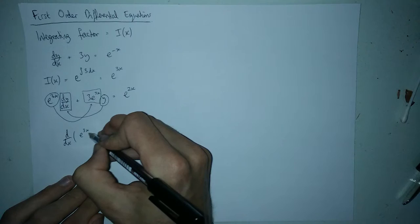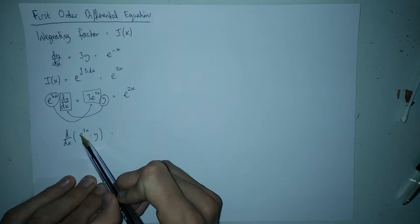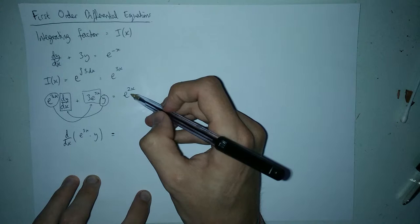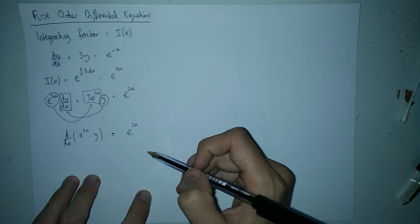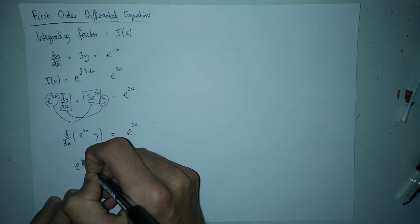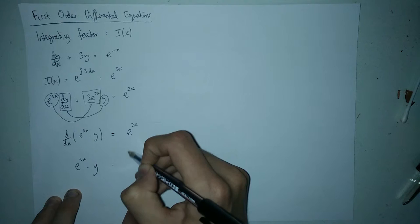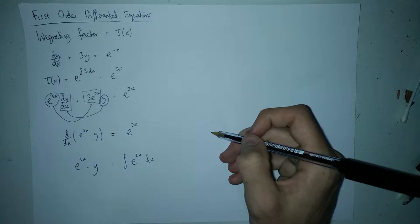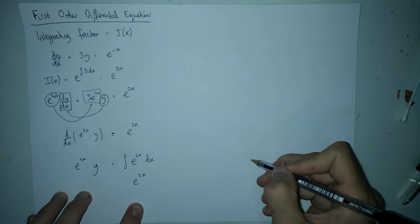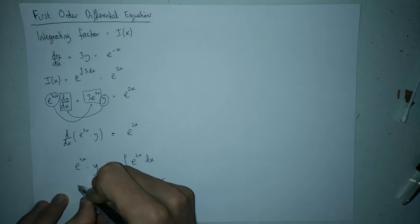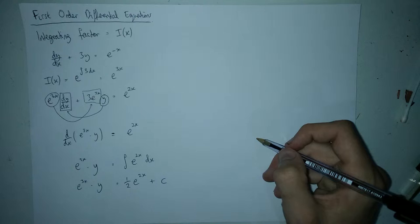That means this side is actually the differential of two things: the integrating factor e to the three x and y. In fact this will always be the case — when you multiply this side by the integrating factor you can always write it as the integrating factor times y. We'll see that again and again. We can now integrate both sides fairly easily because the left side just becomes the integrating factor times y, and we need to integrate the right side as well.